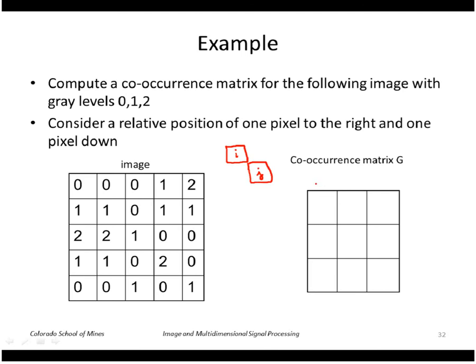We're going to look at a co-occurrence matrix. J goes across the top and I down the side. The first one we'll look at is where a zero is to the right and down from a zero. That occurs here, here, here, and one more place here. So I have four occurrences of that.